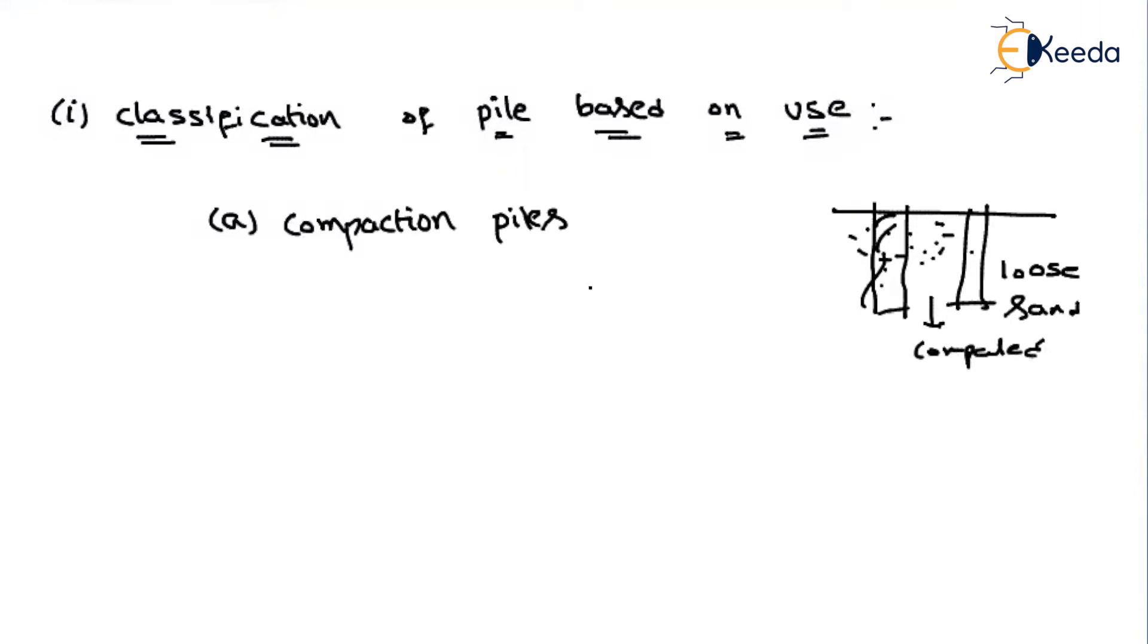That's why this is used for loose sands only. From the name you can understand - if it is a compaction pile, it's used for loose sands and used for the compacting of surrounding soils.